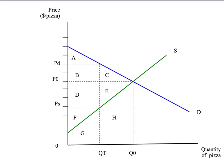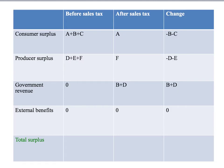What about government revenue? Before the sales tax, the government doesn't get any revenue — it's zero. After the sales tax, the government gets T dollars per unit of pizza sold on every QT units, so it's T dollars times QT units, which is this rectangle — areas B plus D. Government revenue before the sales tax is zero; after the sales tax it is B plus D, so government revenue increases by B plus D. We still have no external costs or benefits, so we just have zeros in that row.